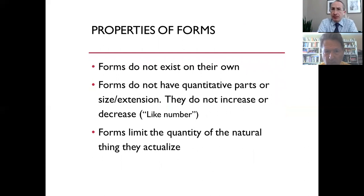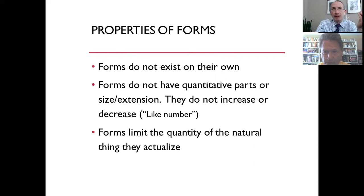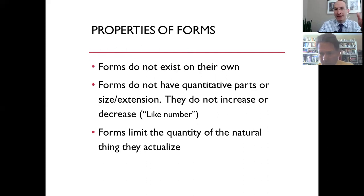Some properties of form: forms do not exist on their own. Just like matter, forms do not have quantitative parts or extension. The form of a dog is not itself two feet or three feet — forms do not exist per se. And forms do not increase or decrease. Aristotle says forms do not increase or decrease and likens them to numbers: you cannot be any more dog or any less dog. You are a dog, or you are a tree, or you are a human being — there are no degrees. Form does not accept different degrees of being, just as number one is number one; anything over one is no longer one.